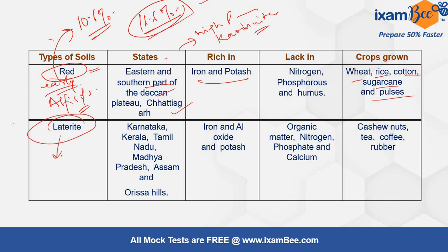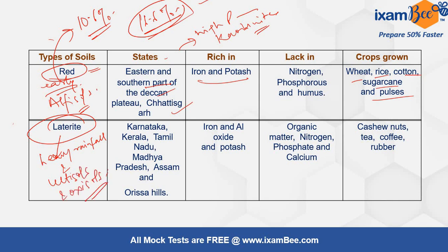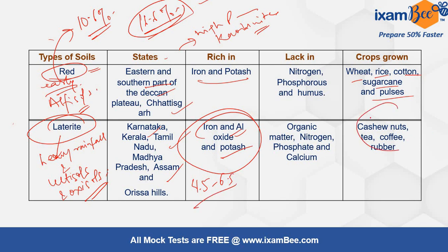Laterite soil is mainly formed by the action of heavy rainfall and high temperature; the soil orders responsible for its formation are Ultisols and Oxisols. It is found in Karnataka, Kerala, Tamil Nadu, Madhya Pradesh, Assam, and Orissa hills. It is rich in Iron and Aluminium Oxide and Potash, and is somewhat acidic with a pH of 4.5 to 6.5. Maximum leaching takes place in this soil. It is suitable for plantation crops and rice, but lacks organic matter, nitrogen, phosphate, and calcium.